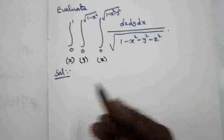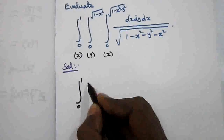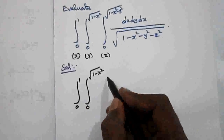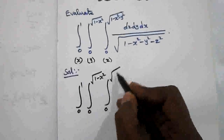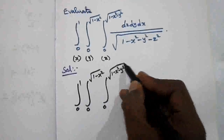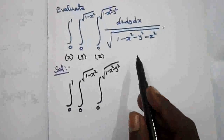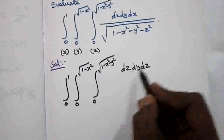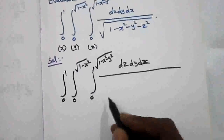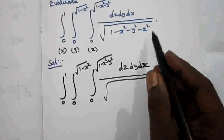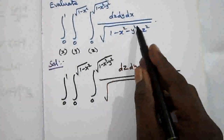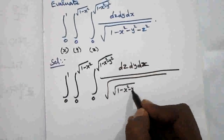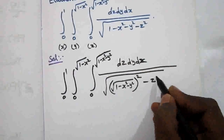Now, taking the given integral from 0 to 1, integral 0 to root of 1 minus x squared, and 0 to root of 1 minus x squared minus y squared. We integrate with respect to z, keeping other variable terms constant. The integrand is dz dy dx divided by root of 1 minus x squared minus y squared minus z squared.